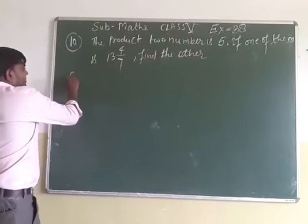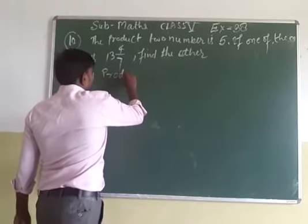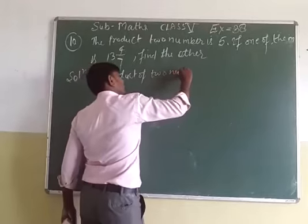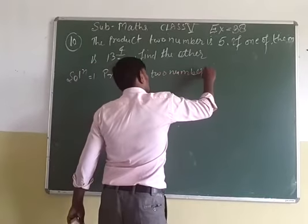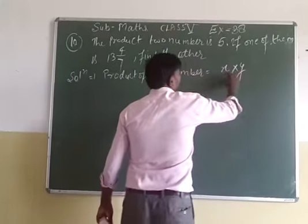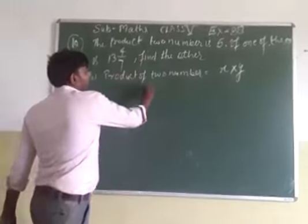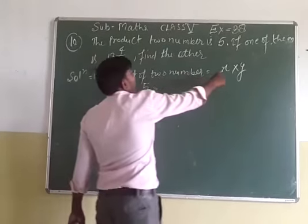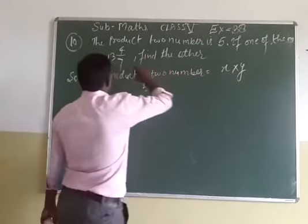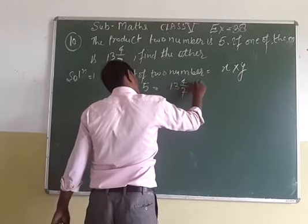Let's discuss the solution. Product of 2 numbers — let the numbers be x and y. Their product x into y is equal to 5. One number, x, is given as 13 whole 4 upon 7. So 5 equals 13 whole 4 upon 7 multiplied by y.